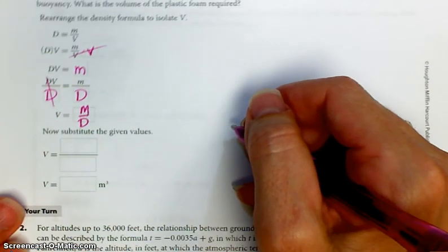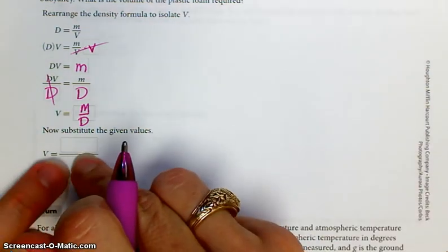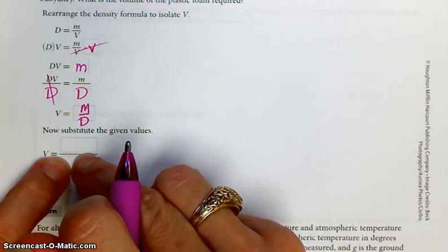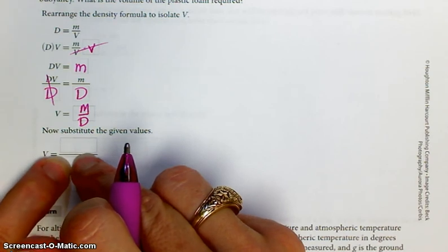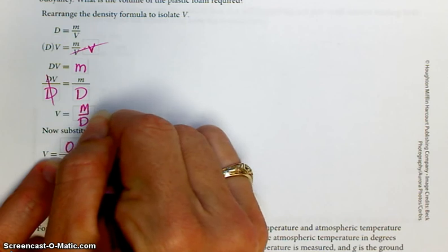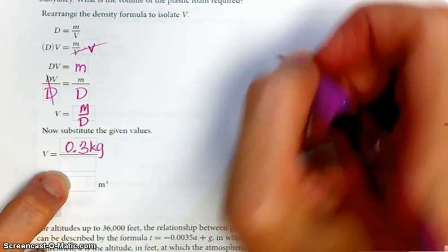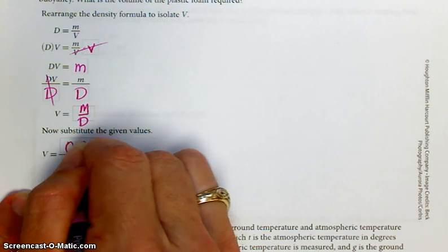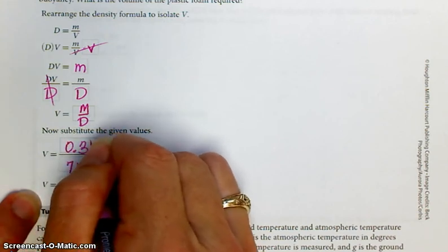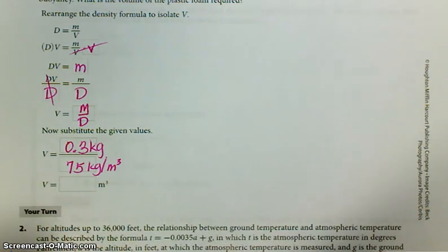And volume is mass divided by density. And now you can take your given values. Let's see. Mass. 0.3 kilograms. And density was 75 kilograms per cubic meter. And you can solve for the volume. So I'm going to go 0.3 divided by 75.